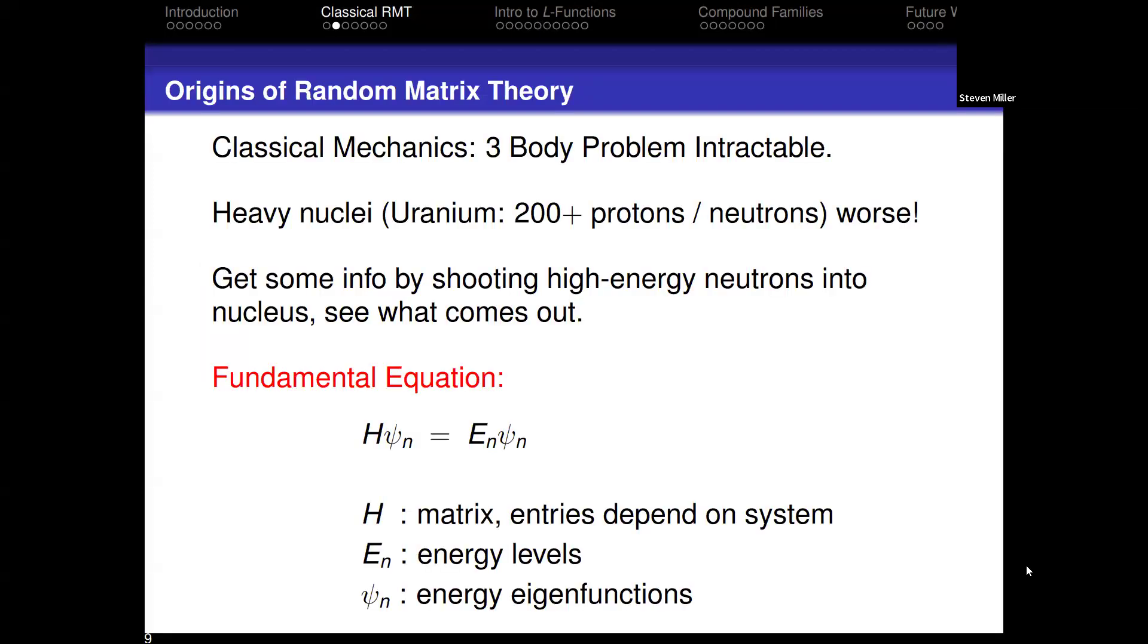In classical mechanics, if you have just one point mass in the universe, it's trivial. Two point masses under gravity, trivial. Three point masses, we can't write down a closed form solution. Imagine how much worse it is with something like uranium with over 200 protons and neutrons. Wigner's great insight was to try to come up with a way to attack something like this. You could try to write down the fundamental equation. You have some operator H, it has the energy eigenstates ψ_n, and then E_n of the energy eigenvalues. This is similar to a linear algebra problem, I want to find the eigenvalues of this operator with two twists. The first is H is infinite by infinite. Normally we don't do that in a linear algebra class. And the second is we don't know any of its entries.